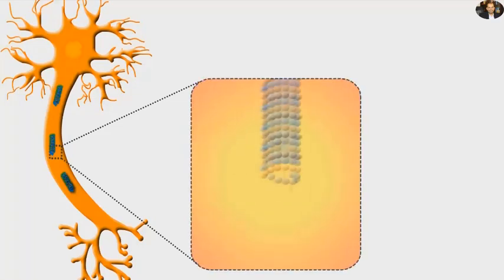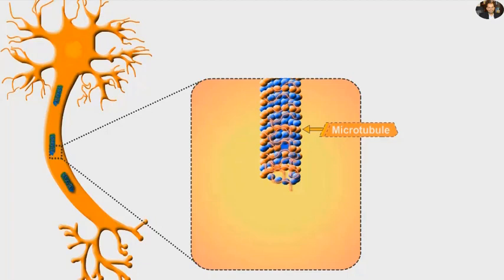Let's start with neurofibrillary tangles. As part of the cytoskeleton, microtubules play an important role in the formation of cell shape and transportation of important nutrients within the nerve cells.